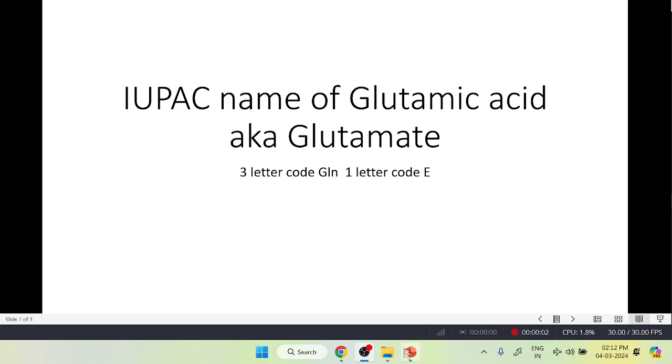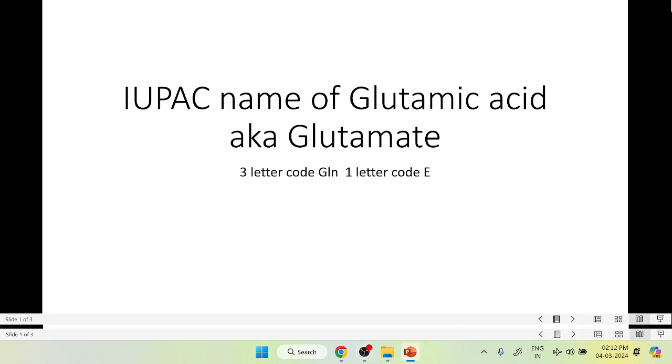Hello students, in this video I am going to talk about the IUPAC name of glutamic acid, also known as glutamate. Three letter code: GLN, one letter code: E. This amino acid comes under the classification of acidic amino acids because of its acidic carboxyl group on its side chain. It also plays a very important role in metabolism in our body.